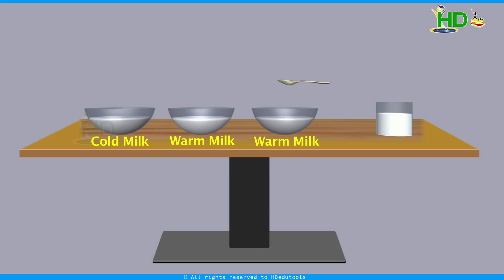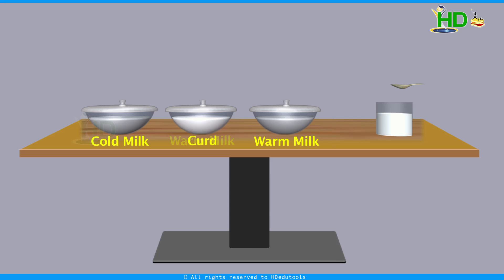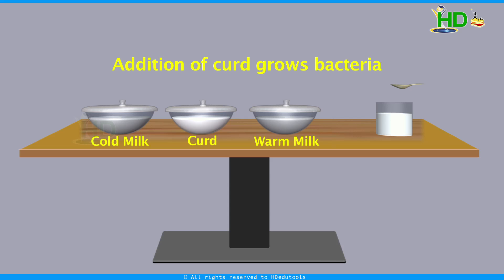Although curd was added to both cold milk and warm milk, only the curd added to warm milk converted the milk into curd. That means the reason for the change of milk into curd is due to addition of sample curd to warm milk. The adding of sample curd to the milk helps to grow some kind of bacteria in it, and that enables the conversion of milk into curd.